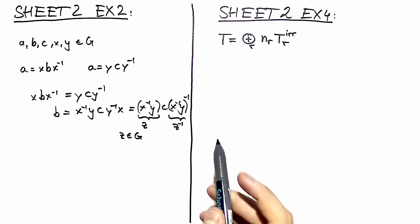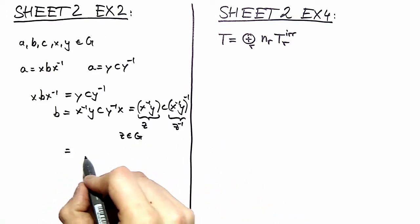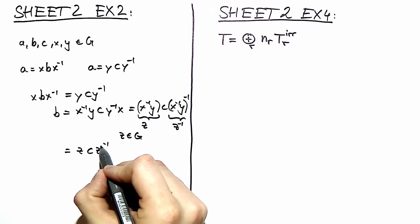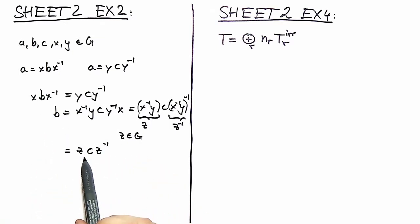So this is it, actually. We've got b = z c z^(-1), which is exactly what we needed to prove. Let's move on to exercise 4.